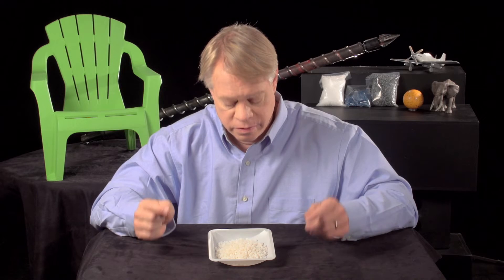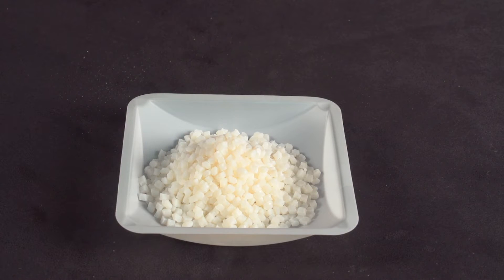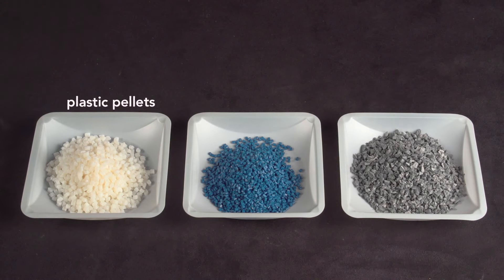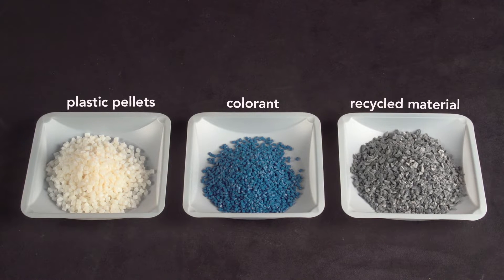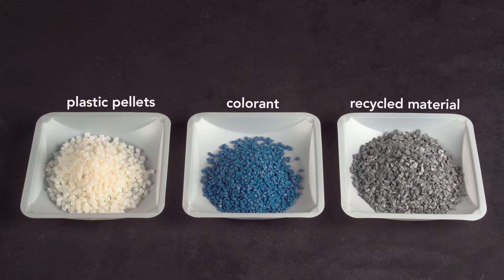All injection molded objects start with these plastic pellets, which are a few millimeters in diameter. They can be mixed with small amounts of pigment, called colorant, or with up to 15% recycled material then fed into the injection molding machine.